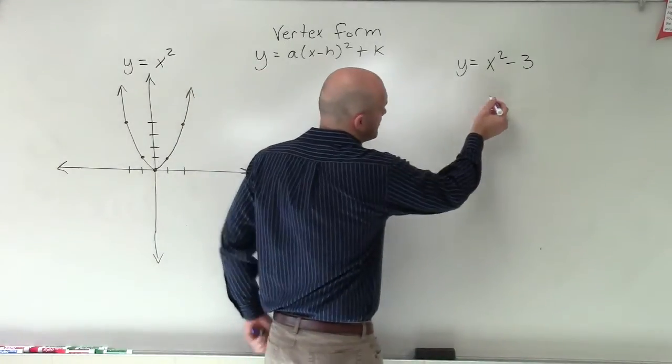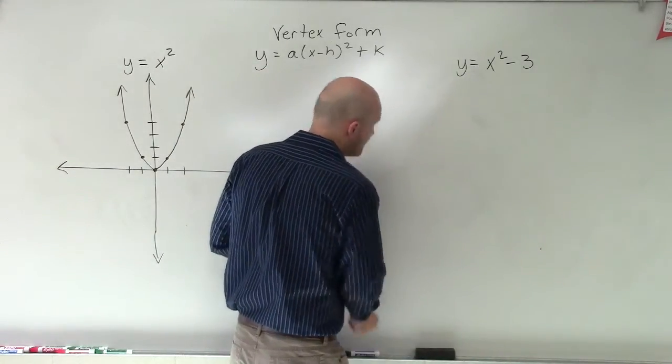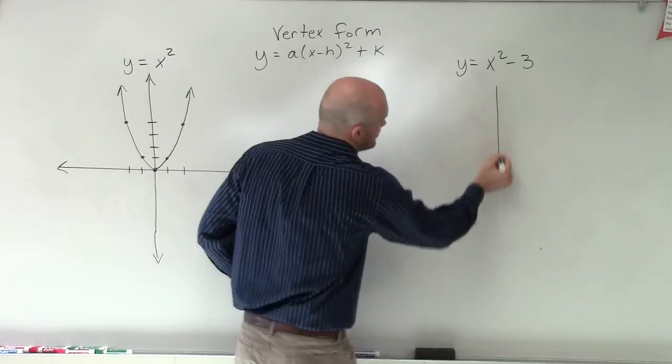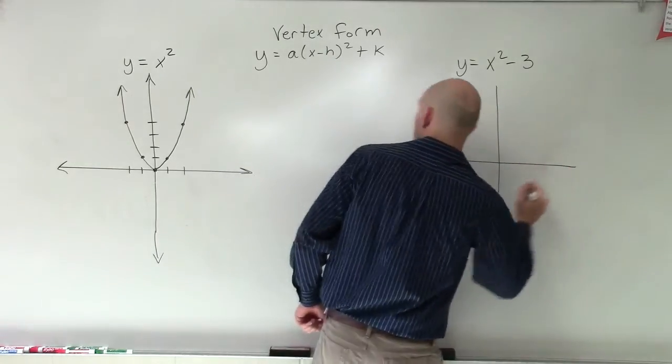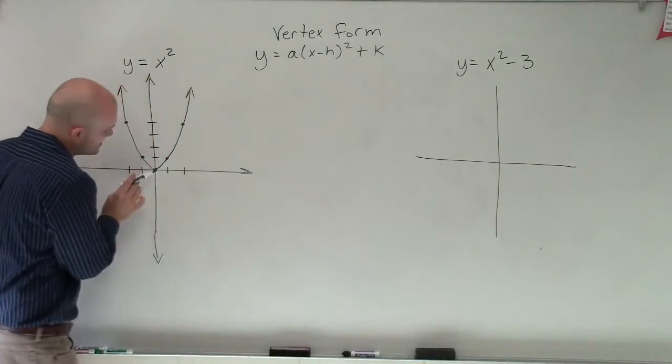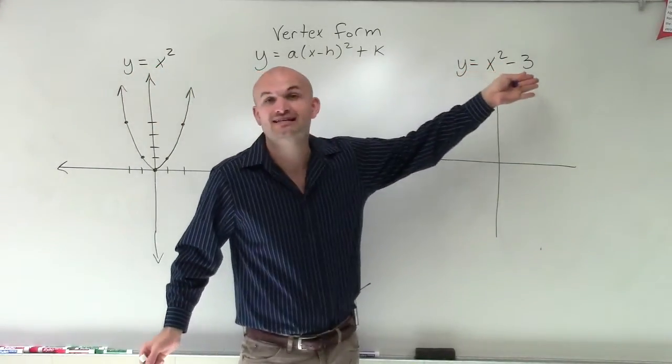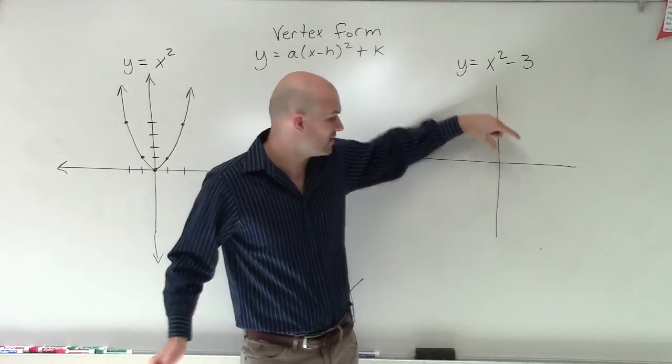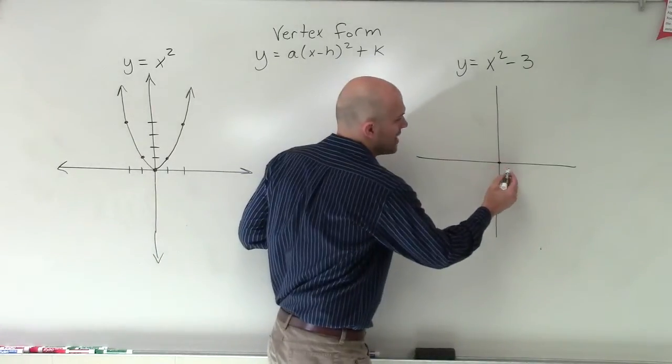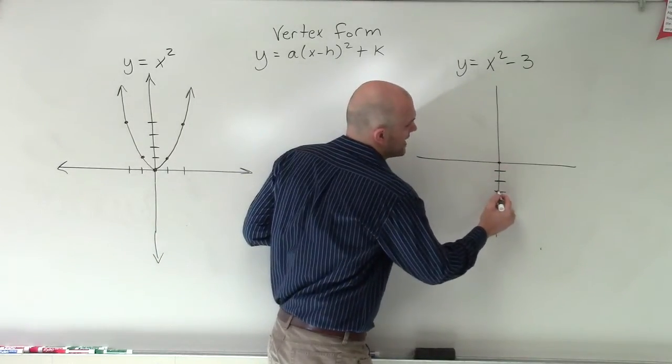So the important thing is when I'm graphing this is I want to be able to find the vertex. And the vertex is going to be the simplest thing for us to move. So our parent graph, our vertex is at 0, 0. So if I'm going to take this down, because now my k is at negative 3, when I shift this down, I'm just going to go instead of starting at 0, 0, I'm now just going to go down 3 units.